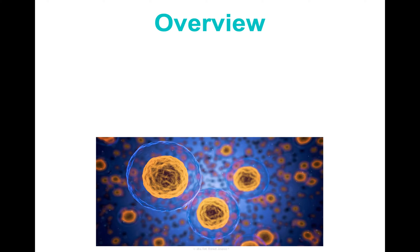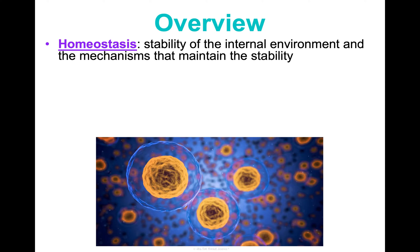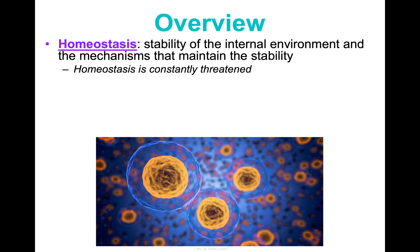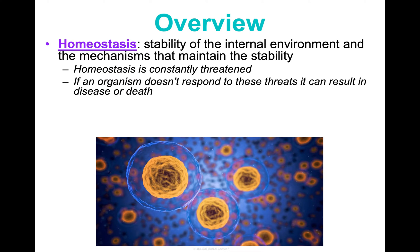A brief overview, just a little reminder of some things, especially if you haven't covered homeostasis in detail. Homeostasis is the stability of the internal environment and the mechanisms that maintain that stability. It's maintaining constant and stable internal conditions within an organism, and it's constantly threatened. There are constantly things coming at an organism that can affect its ability to maintain stability, and if it doesn't respond to stimuli in the environment that can affect it, this could result in disease or death.